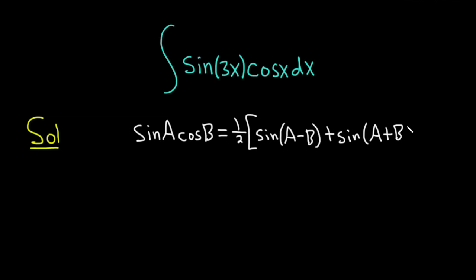And this formula is very useful specifically for problems like this. When you have a problem like this, this is the way to go. So let's go ahead and replace a with 3x and b with x in this formula right here. I'm going to write it in yellow. This is the sine of 3x